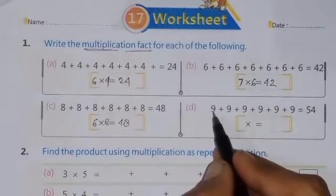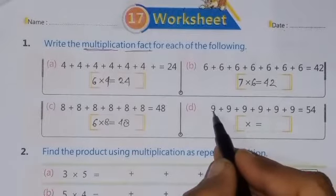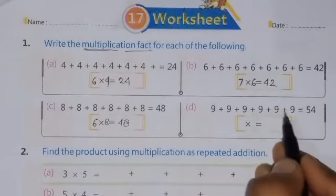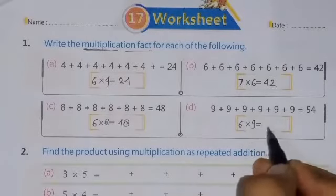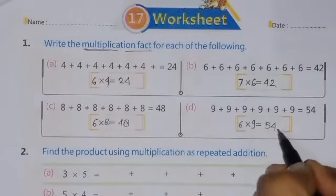Continue next question. Nine is given. How many times? 1, 2, 3, 4, 5, 6. So, 6 times here is given 9. So, 6 nines are 54. Okay, students?